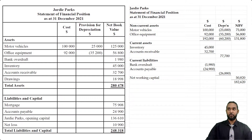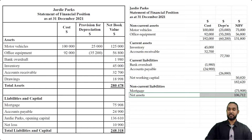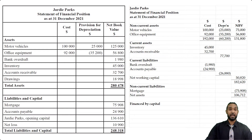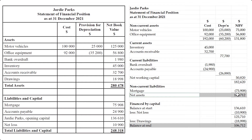Continuing with non-current liabilities — we only have one, the mortgage of 75,908. Subtracting that from 182,620 gives us net assets of 106,712. Now the capital section: opening balance is 136,610. We made a net loss of 10,009 which needs to be subtracted because losses reduce capital. We also have drawings of 18,998 which must be subtracted because drawings is a reduction in capital. That gives us closing capital of 106,712, which matches the net assets figure.